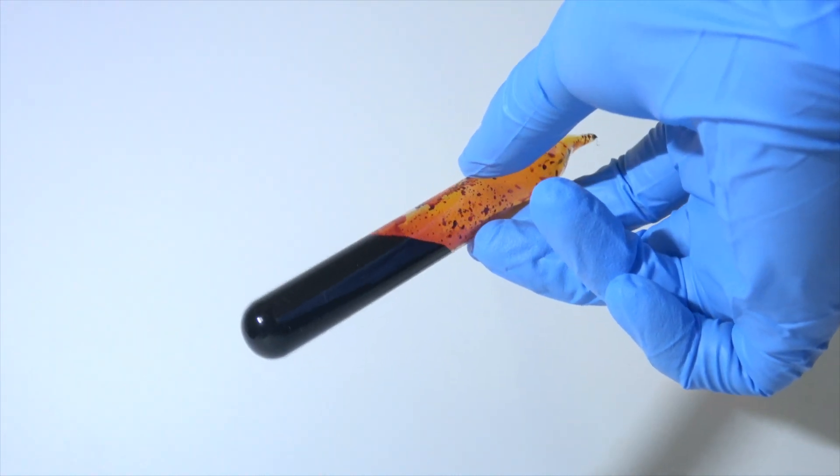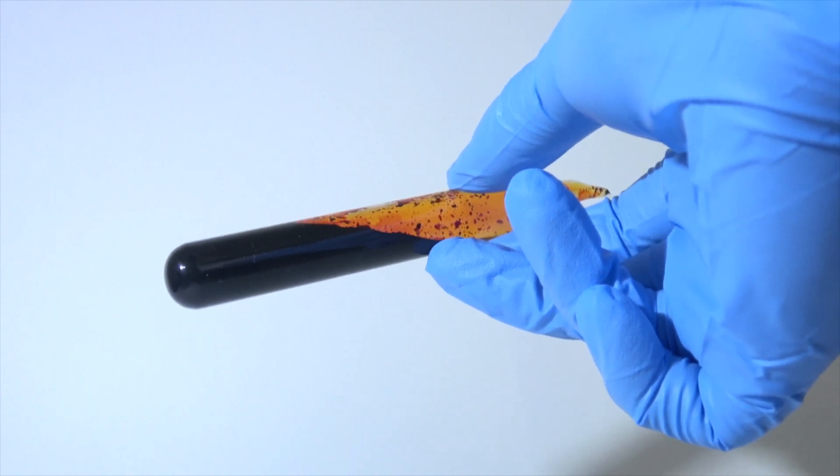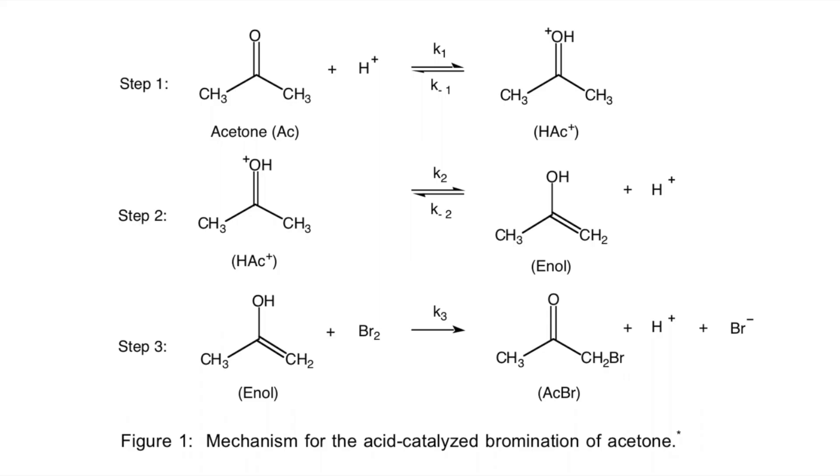Elemental bromine is tremendously useful in organic chemistry. It can be utilized to synthesize organic halides, which opens a path to make many other organic compounds.